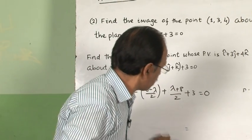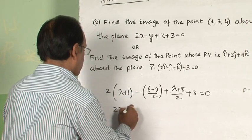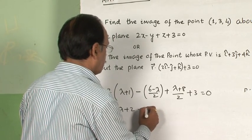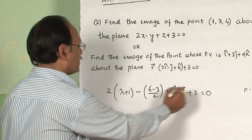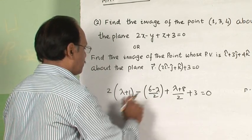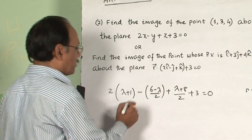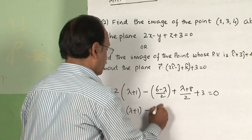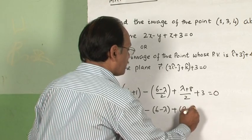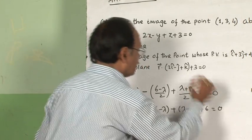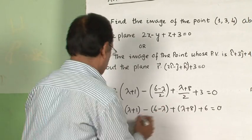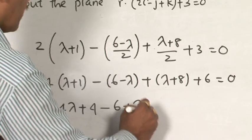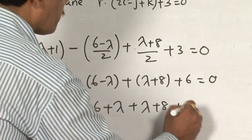Multiplying both sides by 2 to eliminate the denominator terms makes calculation easier. This gives 4(λ+1) minus (6-λ) plus (λ+8) plus 6 equals 0, which expands to 4λ+4 minus 6 plus λ plus λ+8 plus 6 equals 0.